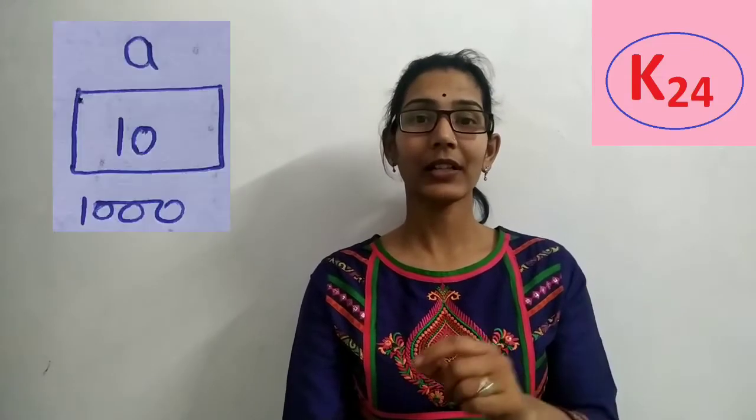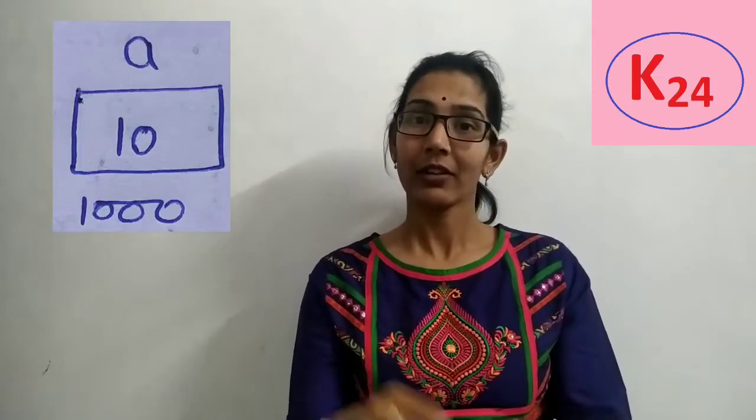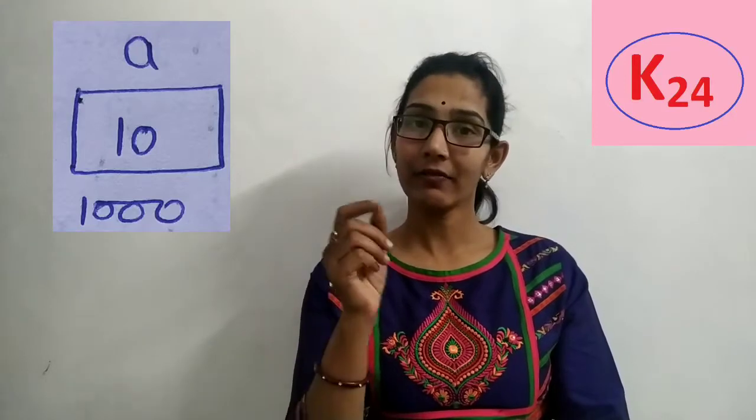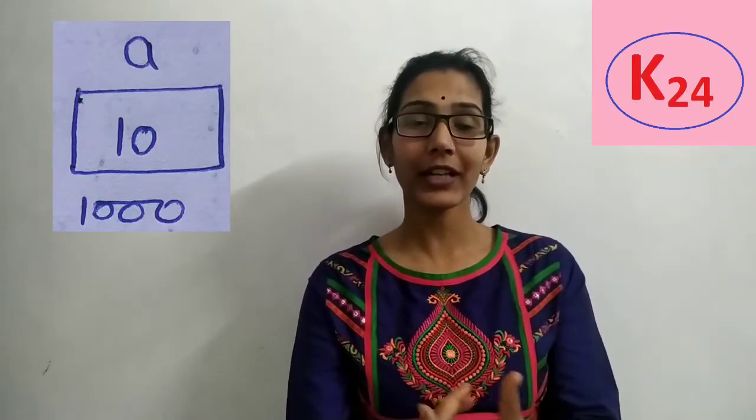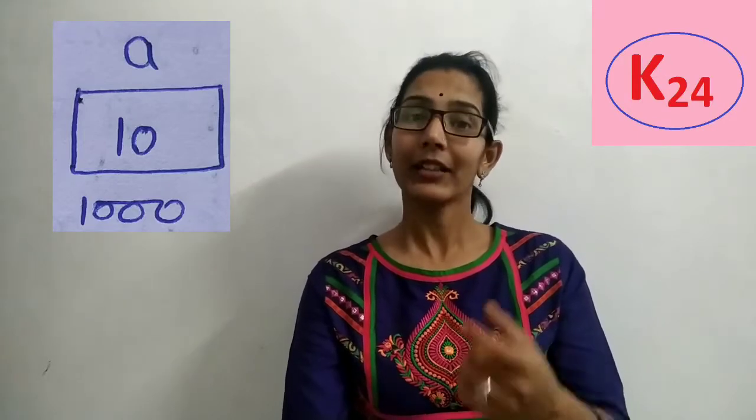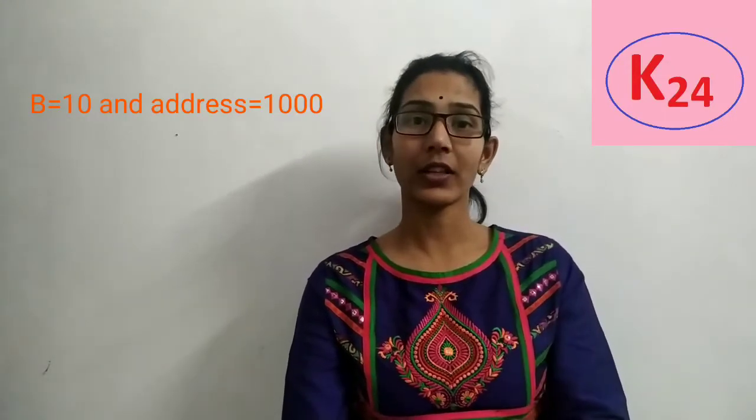For example, 'a' is a simple variable with value 10 and address 1000. If we want to create another variable at the same memory address, we use a reference variable. Suppose 'b' is a reference variable — it has the same value 10 and the same address 1000. If we change the value in either variable, the change will reflect in both variables.